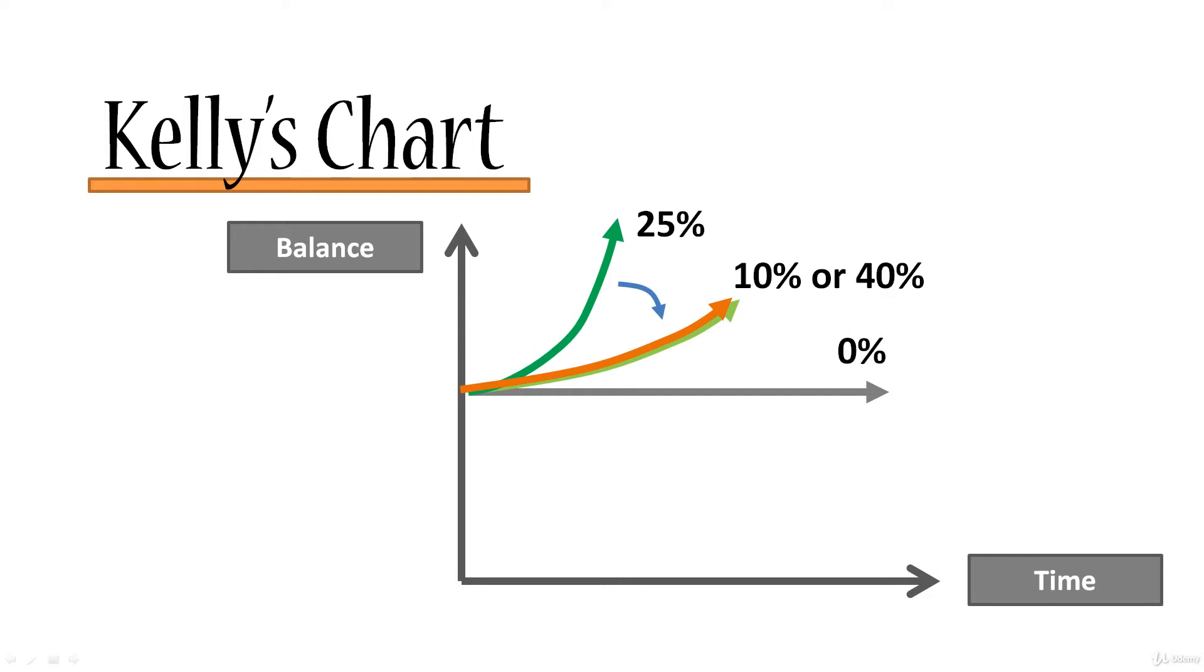If you keep increasing the balance that you're betting and go to 50%, you will once again break even. The arrow will go back to the exact same position as where it was at 0%.